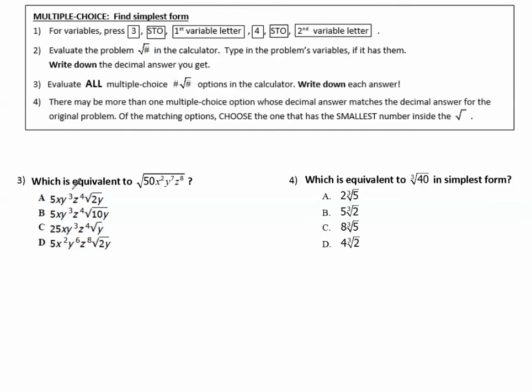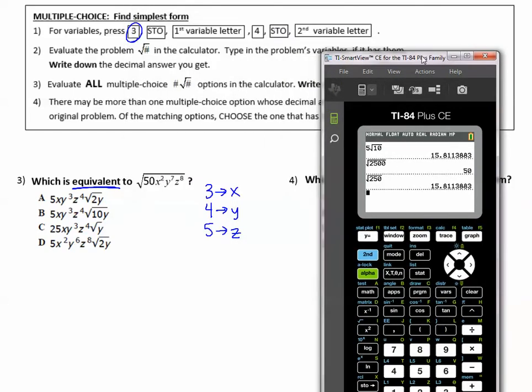Example number 3, which is equivalent to square root of 50 x squared, y to the seventh, z to the eighth. Now this one does have variables. So when it has variables, I want to store numbers into each of those variables, starting with the number 3. So I see there's an x, I'm going to store 3 for x. I see there's a y, so pick a different number, 4 for y. And I see there's a third letter, so pick the next number up, 5 for z.